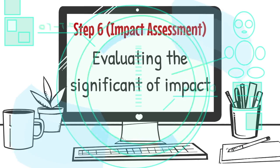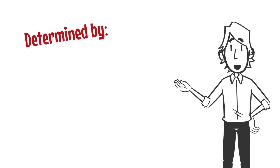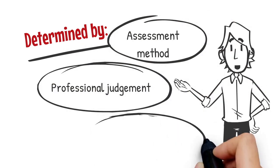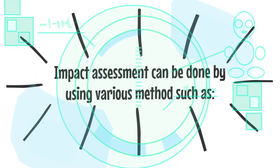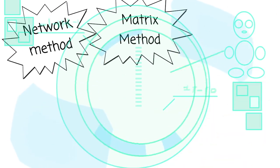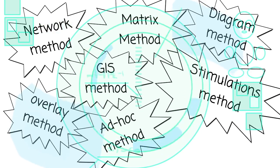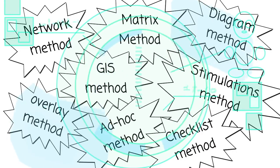Step 6 evaluates the significance of impact to the environment. For this assessment, it is usually determined by the assessment method, professional judgment, and reference to regulatory bodies. Impact assessment can be done using various methods such as: network method, matrix method, diagram method, overlay method, GIS method, simulations method, ad hoc method, and checklist method. The checklist methods are widely used in Malaysia due to Department of Environmental requirements and guidelines.